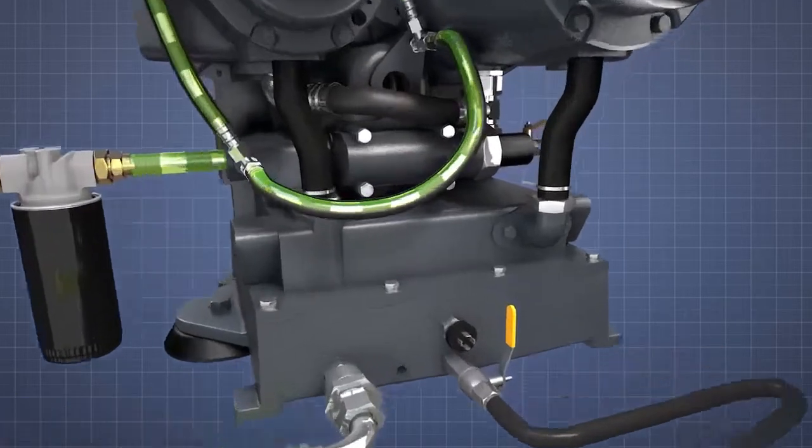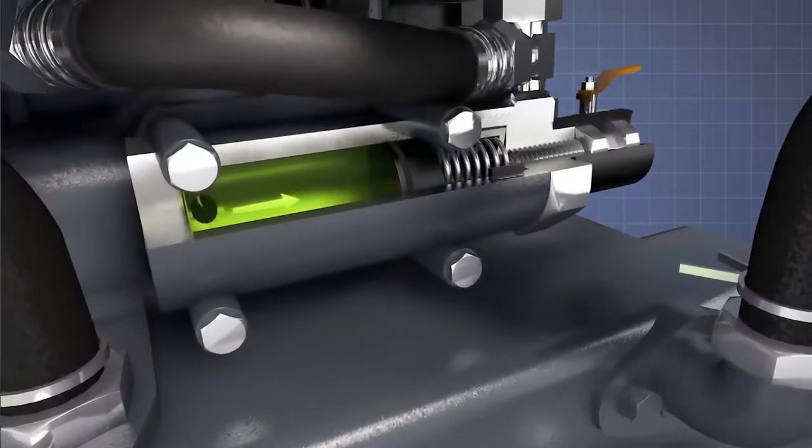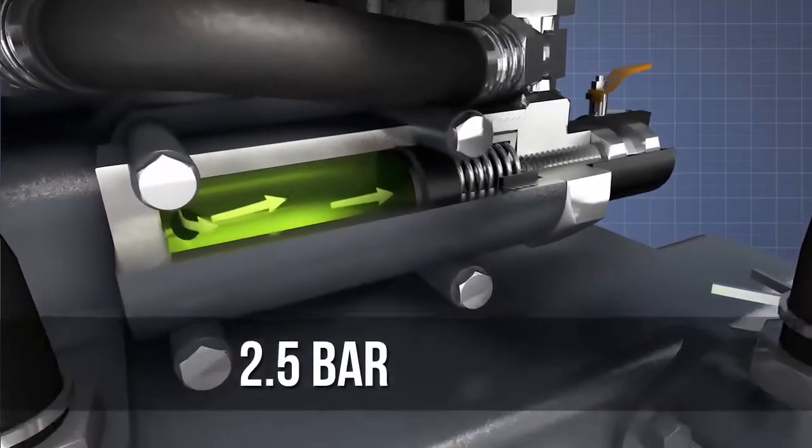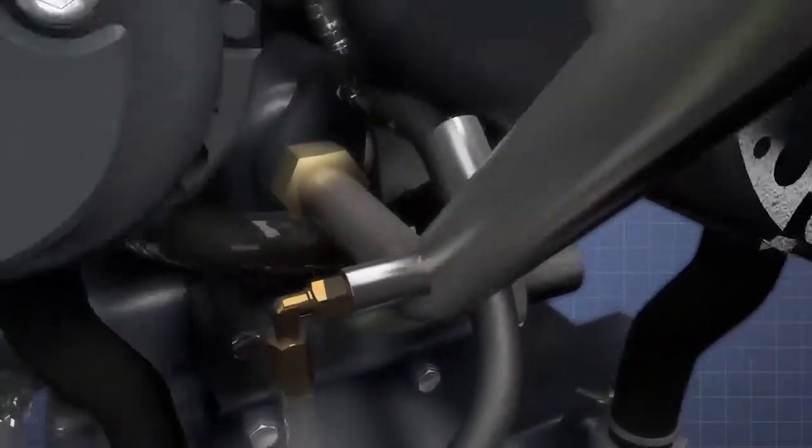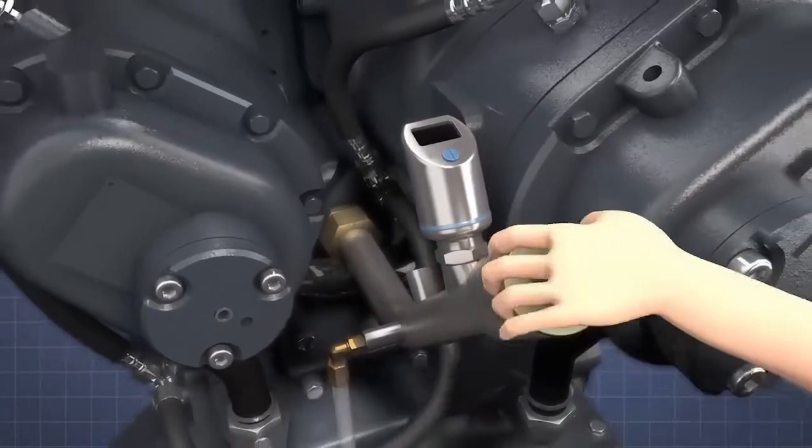A pressure relief valve fitted to the front of the air-end ensures that oil pressure doesn't exceed 2.5 bar or 36 psi. Oil is topped up via a filler pipe at the front of the air-end.